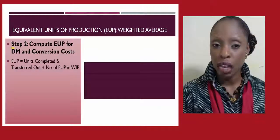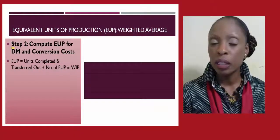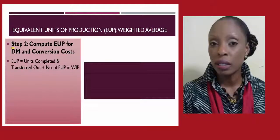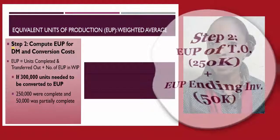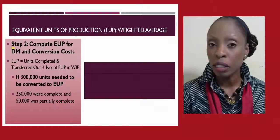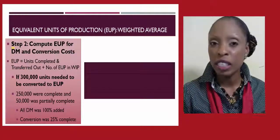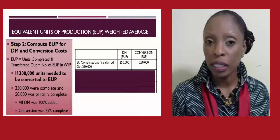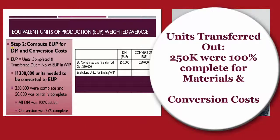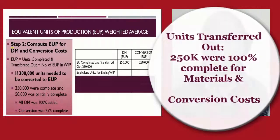Step 2 is computing the equivalent units of production. The equivalent units of production equals the equivalent units completed and transferred out plus the equivalent units in work-in-process. If Accounting is Fun, Inc. had 300,000 units to convert, assume 250,000 were complete and 50,000 were partially complete. Since the 250,000 transferred out were fully complete, they count as 250,000 equivalent units each for both direct materials and conversion costs.